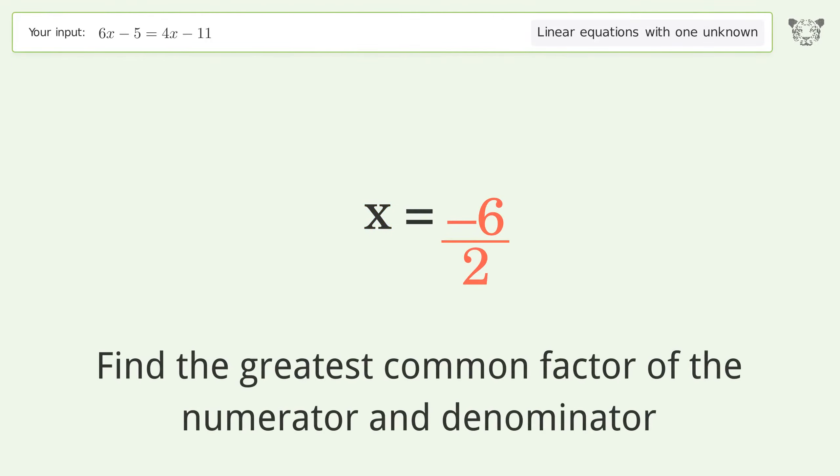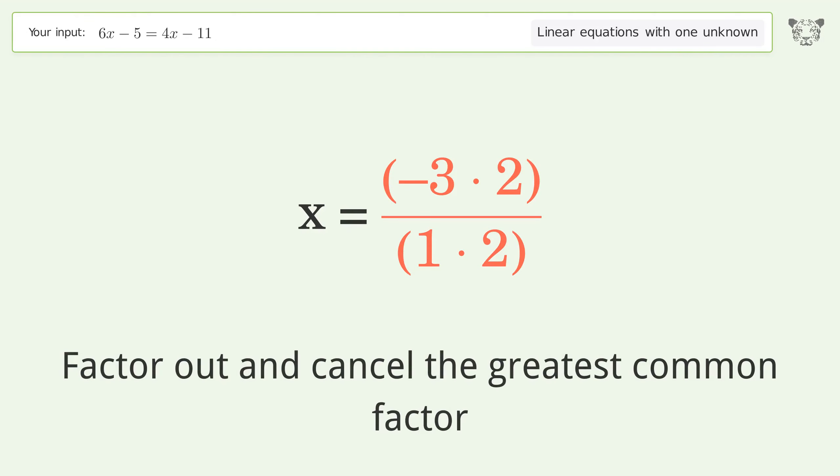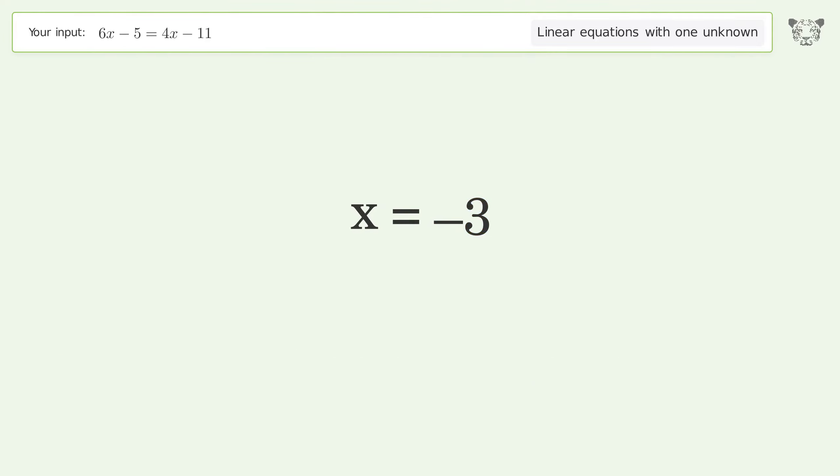Find the greatest common factor of the numerator and denominator. Factor out and cancel the greatest common factor. And so the final result is x equals negative 3.